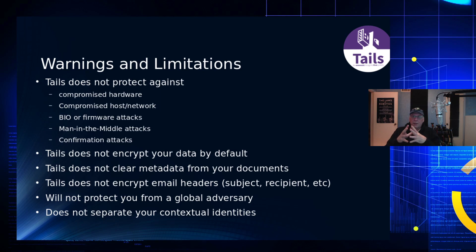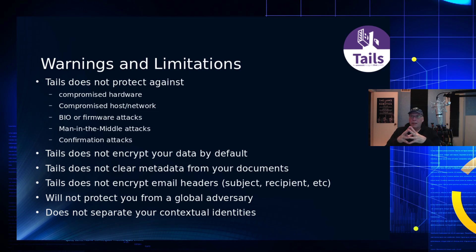Tails does not encrypt email headers. Email headers are not encrypted going over the network — that includes the subject, the title line, the recipient, and any additional information in your mail header. That is not encrypted, and Tails doesn't do anything about that because the protocols on the internet don't support encrypted headers. It won't protect you from a global adversary — if someone has a lot of money and is monitoring every single node on the internet, Tor and Tails are not going to protect you.